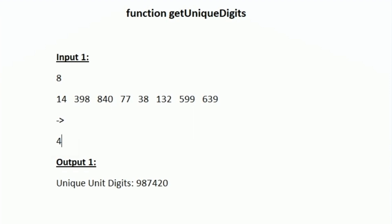The unit digit in the first integer 14 is 4, in the second integer it is 8, for the third integer the unit digit is 0, for 77 it is 7, for 38 it is 8, for 132 it is 2, for 599 it is 9, and for 639 it is also 9. So these are all the unit digits of the given 8 integers.